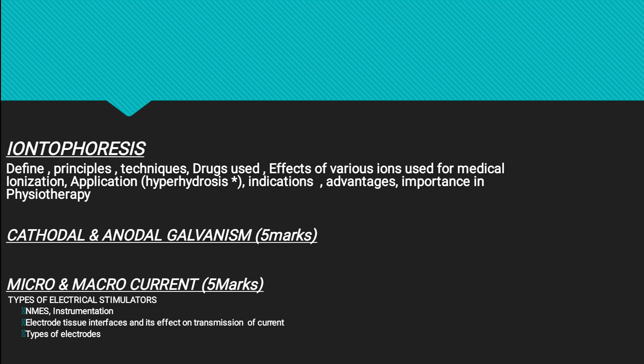Then we have cathodal galvanism and anodal galvanism. Then we have micro and macro currents — that is a small topic, three to five marks. And then we have types of electrical stimulators, that is NMES — neuromuscular electrical stimulator. What is the instrumentation for NMES? What are the types of electrodes used for NMES? Where to place the electrodes for NMES? So I'll be posting all these questions as screenshots so you can pause the video and take a screenshot.